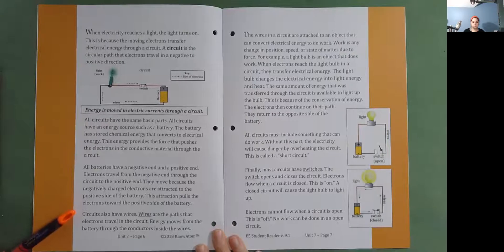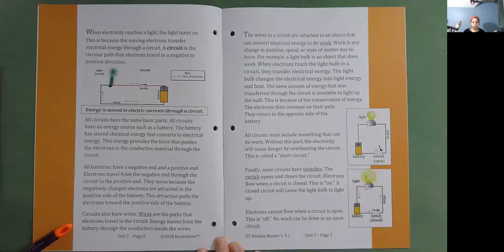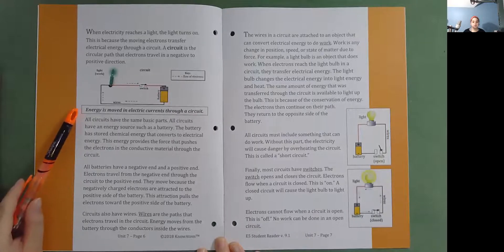Circuits also have wires. Wires are the paths that electrons travel in the circuit. Energy moves from the battery through the conductors inside the wires. Energy is moved in electric currents through a circuit.